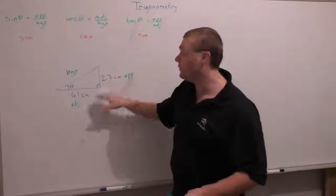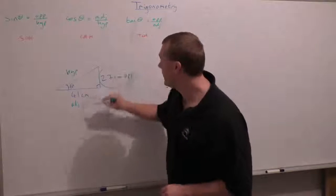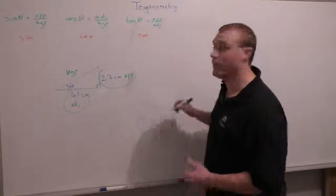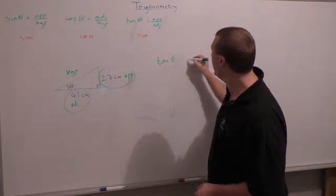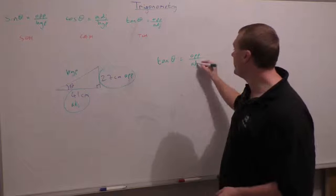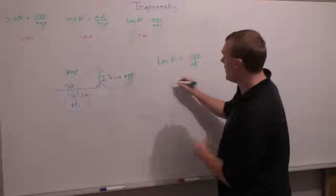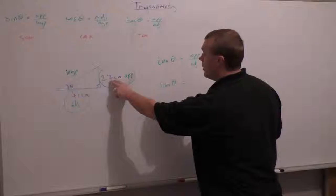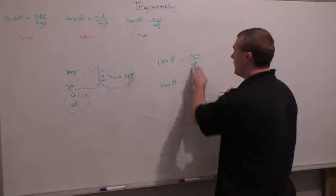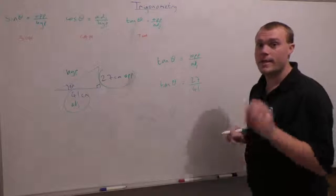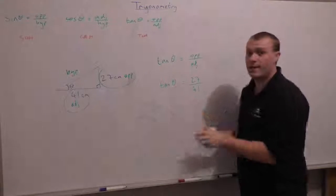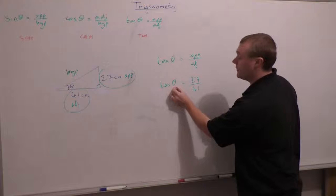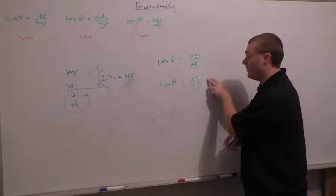We need a formula using the two sides we know. The two sides we know are the opposite and the adjacent, so we'll use the tan formula. Start with: tan theta is the opposite over the adjacent. Tan theta — theta is what we're trying to find. The opposite, 27, goes on top of the fraction; the adjacent, 41, goes on the bottom. Now we need to work out how to undo this tan, because theta has had a tan function done to it in order to get this ratio.